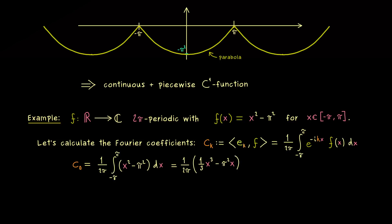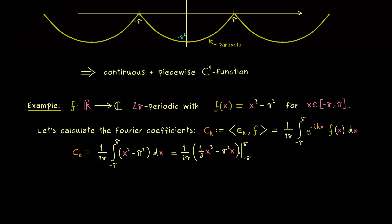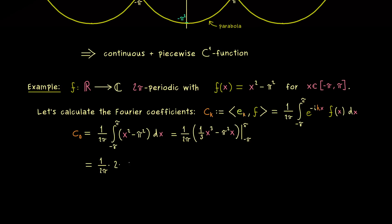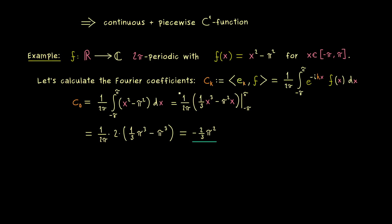The antiderivative is ⅓x³ - π²x, evaluated at π and -π. Since we subtract the lower limit we get the same result twice, so we have 2 times (⅓π³ - π²·π), which is also π³. Putting everything together we get c_0 = -⅔π².